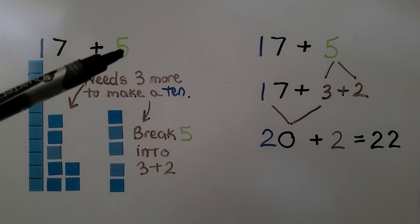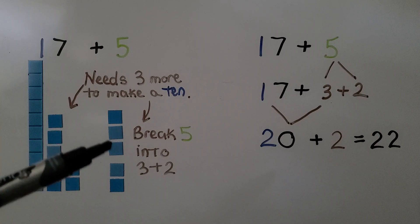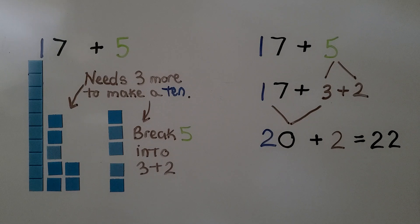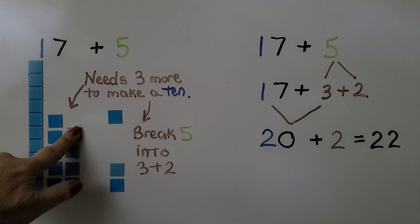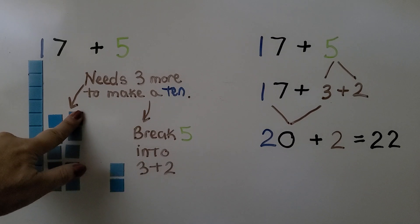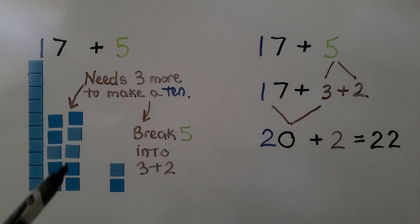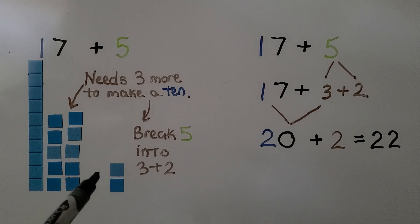So we break the 5 into a 3 plus a 2. We give the 3 to the 7. We make a ten. Now we have 1, 2 tens, and 2 ones.